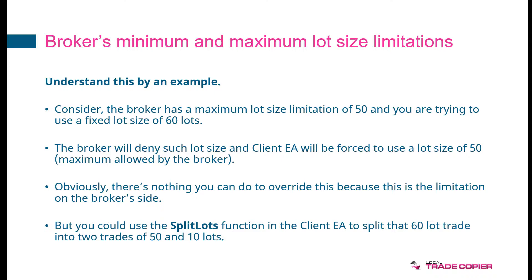You might try calling them and say, hey, could you raise my maximum lot size, and they might do this for you. If someone is trading at 60 lots — pretty big fish maybe — they might take your request and make it happen. But for most of us, it just won't. To avoid this, there is a parameter called split lots — a function in the client EA that you can use to split that 60 lot trade into two trades of 50 and 10. That's kind of a workaround for these broker limitations.